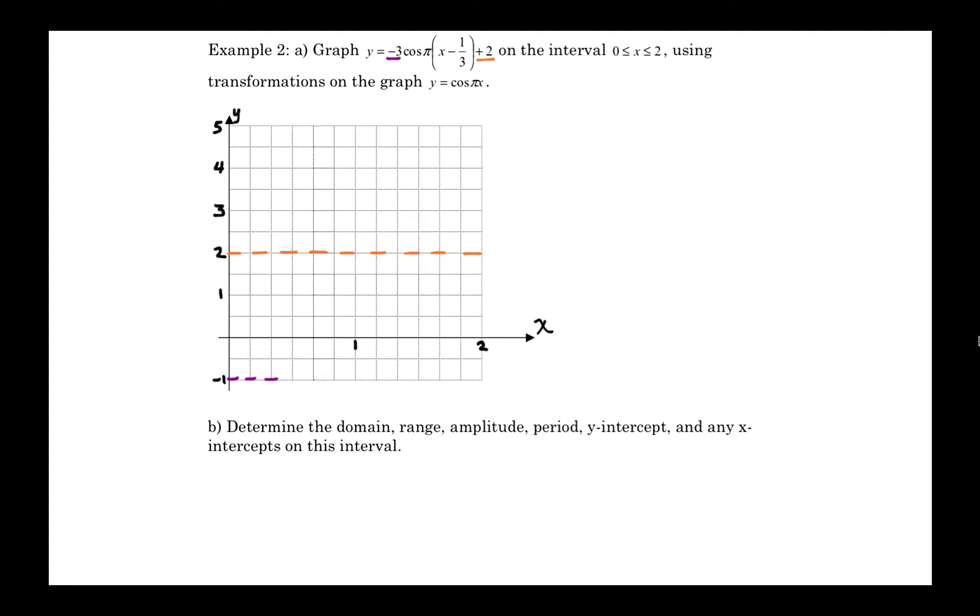And now we also have an amplitude of 3, so we can go 3 above and 3 below that line y equals 2 to find out exactly how high and how low this function will go. And we've got a minus 1 third, so that means there's a phase shift or a horizontal shift to the right by 1 third.